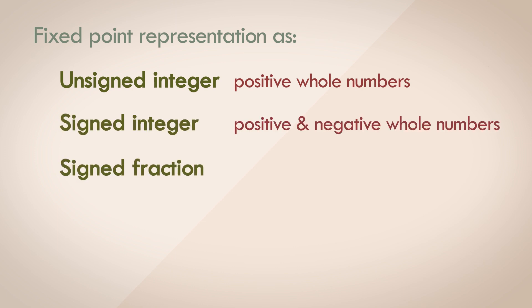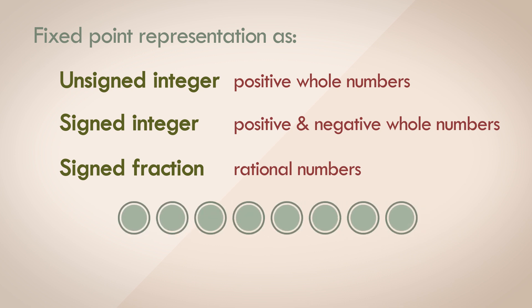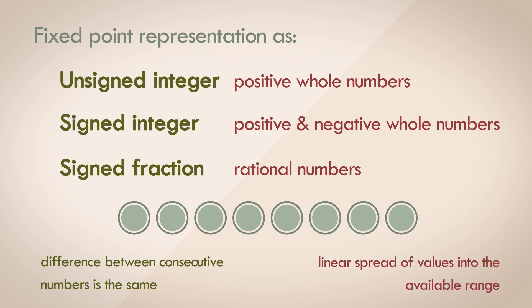A number can be a fractional value as well. So being able to represent rational numbers is quite useful as well. So in digital systems, we have a fixed number of bits that we can store our numbers in. So the easiest and most obvious strategy is representing the numbers such that the difference between the consecutive numbers is always the same. So this means we put a linear spread of values into the available range.